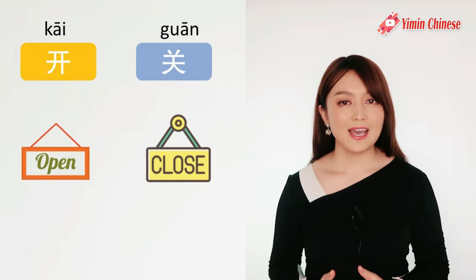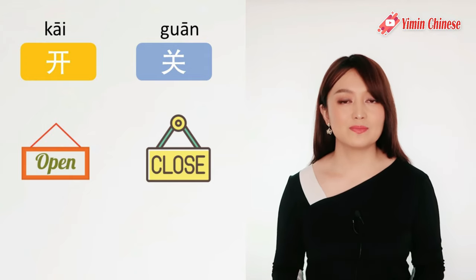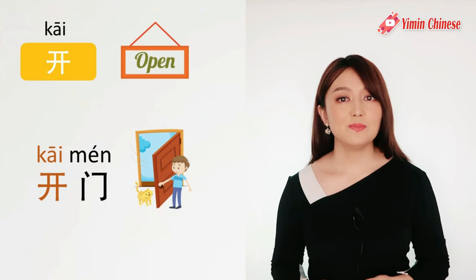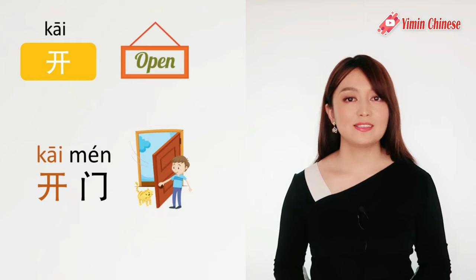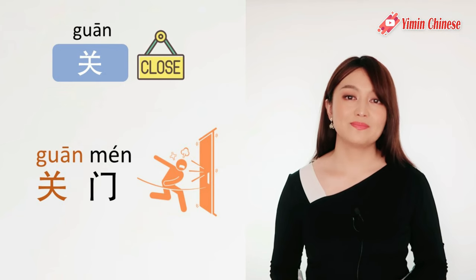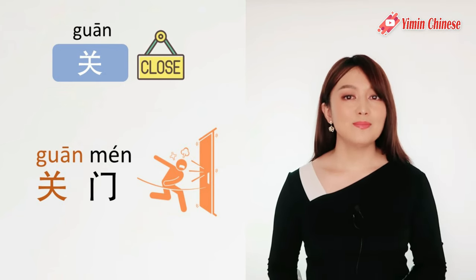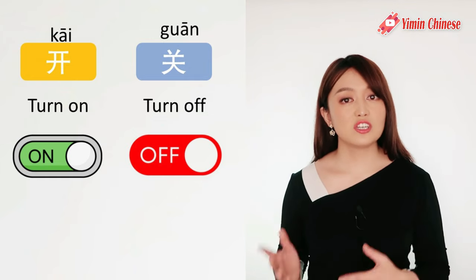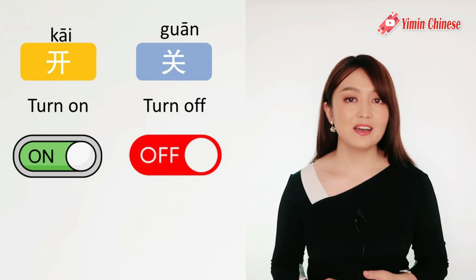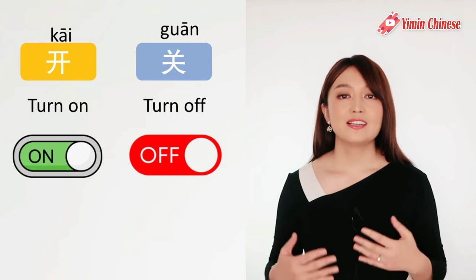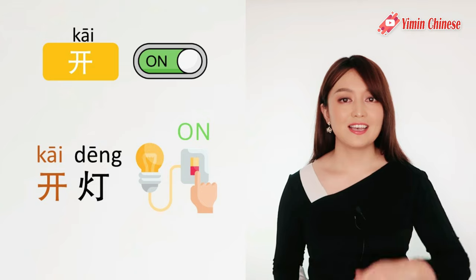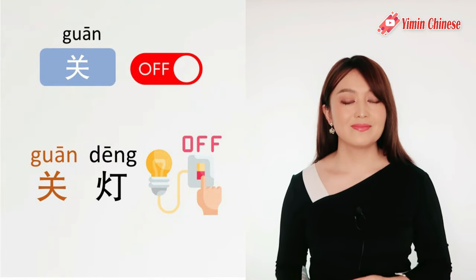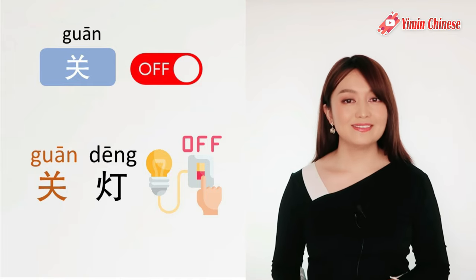好, 下一组, next pair: 开和关, open and close. 开, open: 开门, open the door. And close the door is 关门. By the way, these two words also mean turn on and turn off — still opposites. So 开 means turn on, like 开灯, turn on the light. And turn off the light is 关灯.